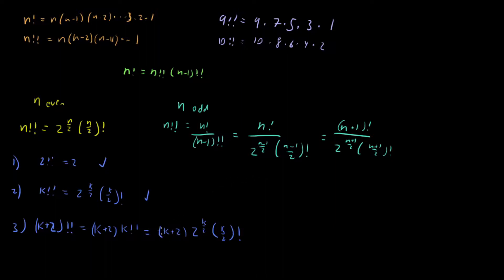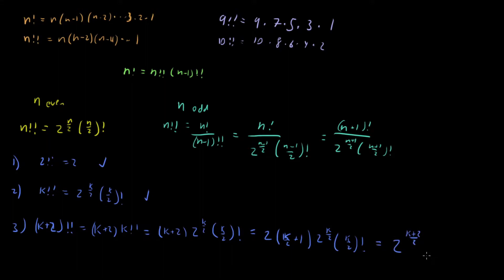We can pull out a factor of 2, rewriting this as 2 times k over 2 plus 1 times k over 2 plus 1 times 2 to the k over 2 times k over 2 factorial. Notice we can absorb the k over 2 plus 1 factor into the factorial and combine the powers of 2, giving us 2 to the k plus 2 over 2 times k over 2 plus 1 factorial. This checks out — we've proved the formula true for k plus 2, completing the induction.